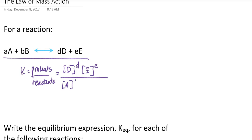We divide that by the molar concentration of A to the A power multiplied by the concentration of B to the B power. This equilibrium constant is based on concentration, so it is given the abbreviation KC. Note that this equilibrium constant shares the same letter designation as the rate constant, with the difference that a rate constant in kinetics is represented by a lowercase k, whereas an equilibrium constant is represented by an uppercase K. It's important to make that distinction so we don't confuse the constants.